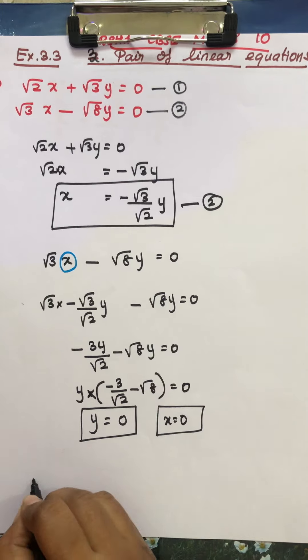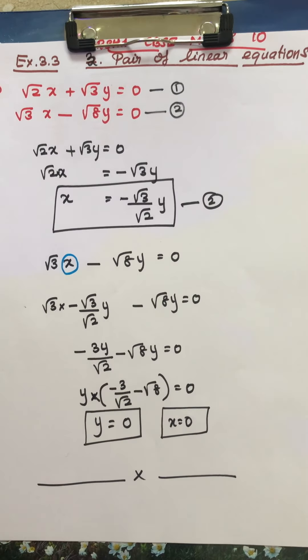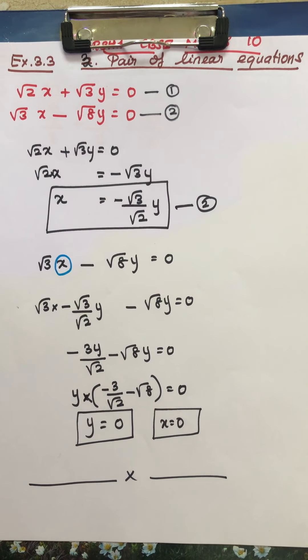So both are 0. So we got our answer. That's all. So do you understand? It is very simple sum. Very, very, very simple sum. Very small steps.